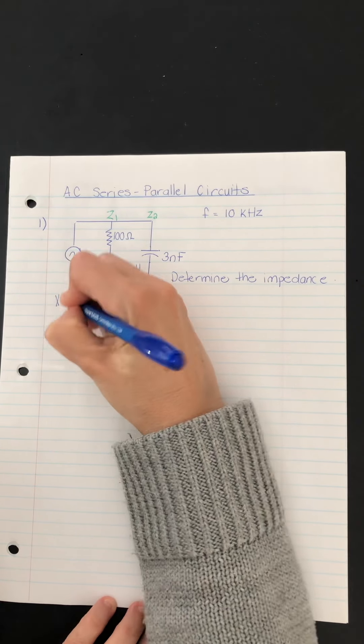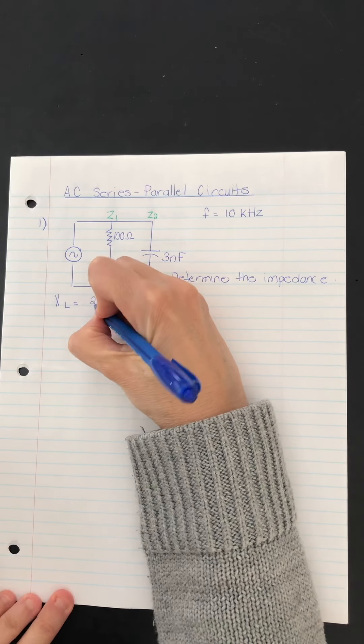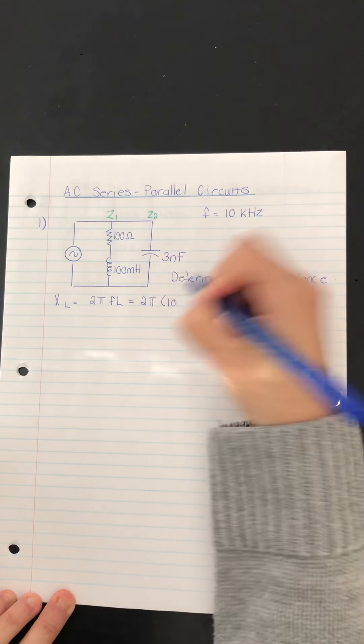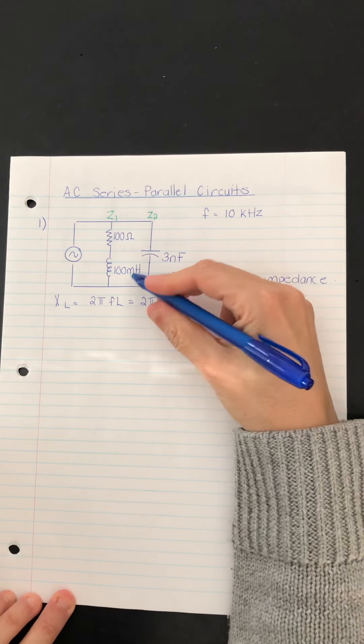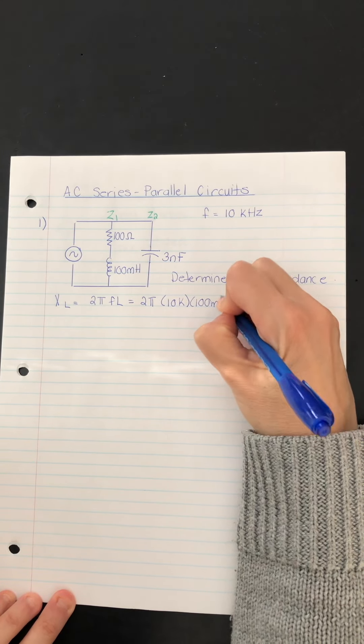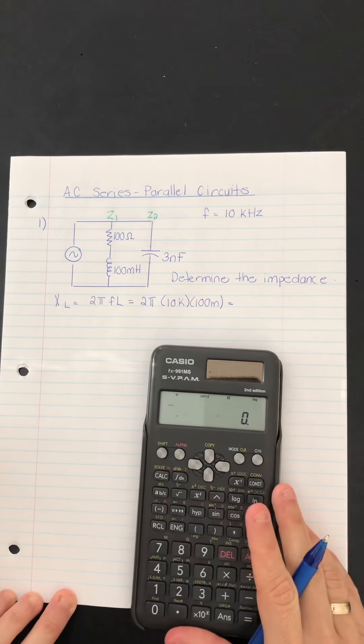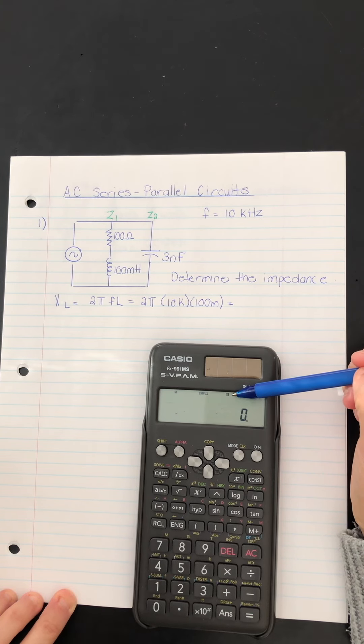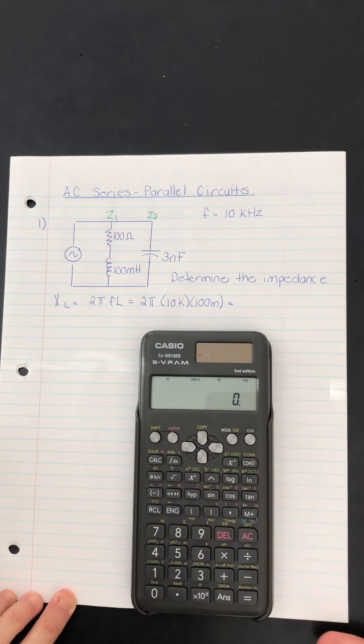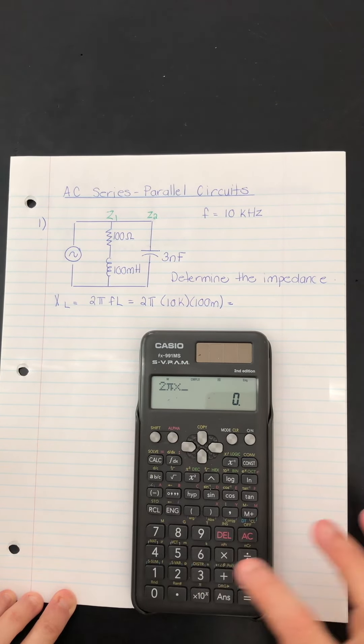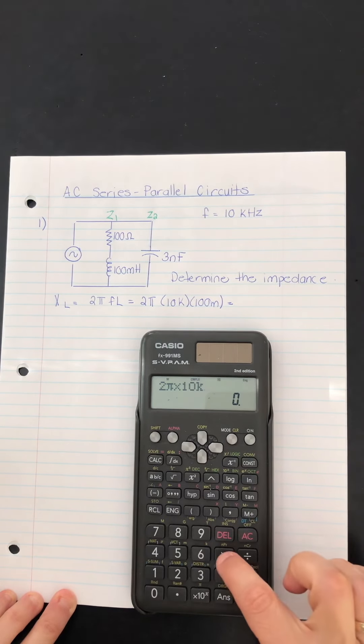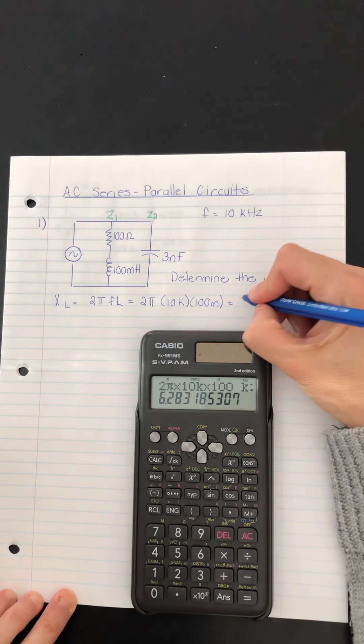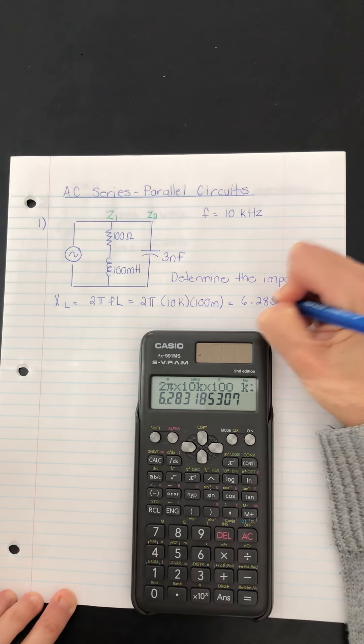So we start with the formula for XL, 2 pi FL. So we take 2 pi and multiply by 10k and 100 milli. So I'm going to show you that calculation. You can see here I've got complex mode on. I've ensured that I'm in degrees. I also have engineering mode on. So 2 pi multiplied by 10 kilo and by 100 milli.